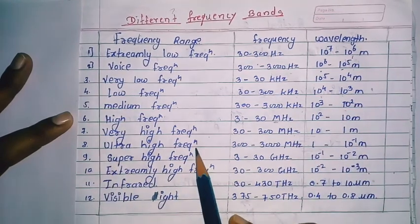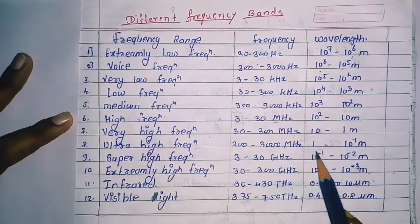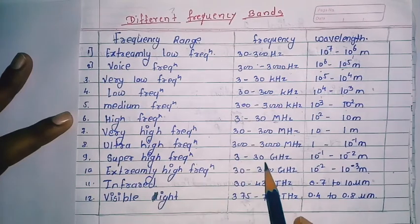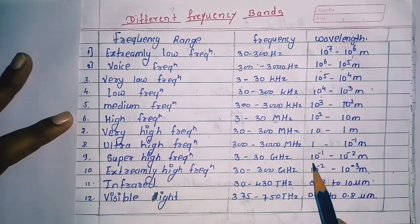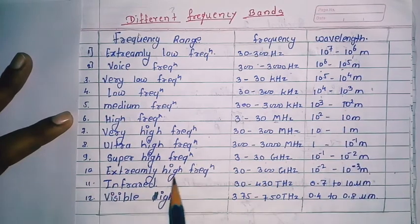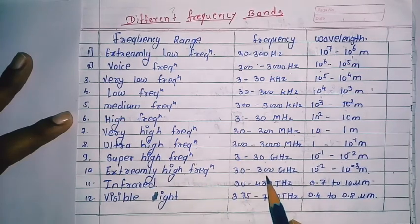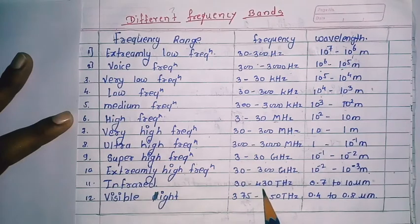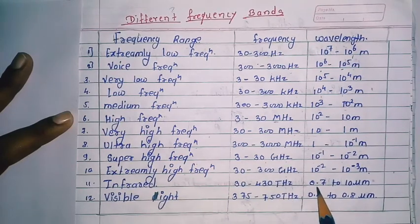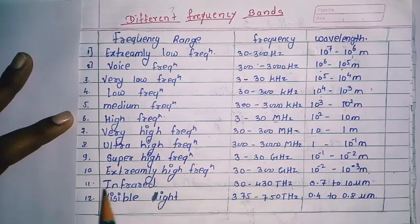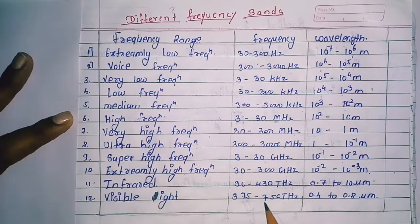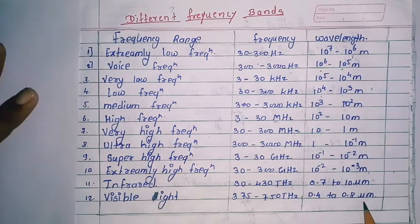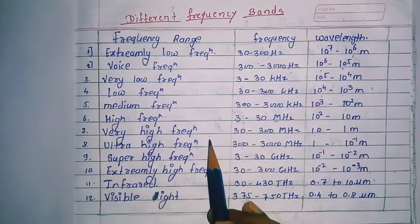Ultra high frequency: 300 to 3000 MHz, wavelength 1 to 10⁻¹ meters. Super high frequency: 3 to 30 GHz, wavelength 10⁻¹ to 10⁻² meters. Extremely high frequency: 30 to 300 GHz, wavelength 10⁻² to 10⁻³ meters. Infrared: 30 to 430 THz, wavelength 0.7 to 10 micrometers. Visible light: 375 to 750 THz, wavelength 0.4 to 0.8 micrometers. This completes the different frequency bands.